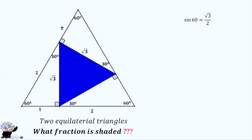We have 1 here. The side of the smaller equilateral triangle is √3.